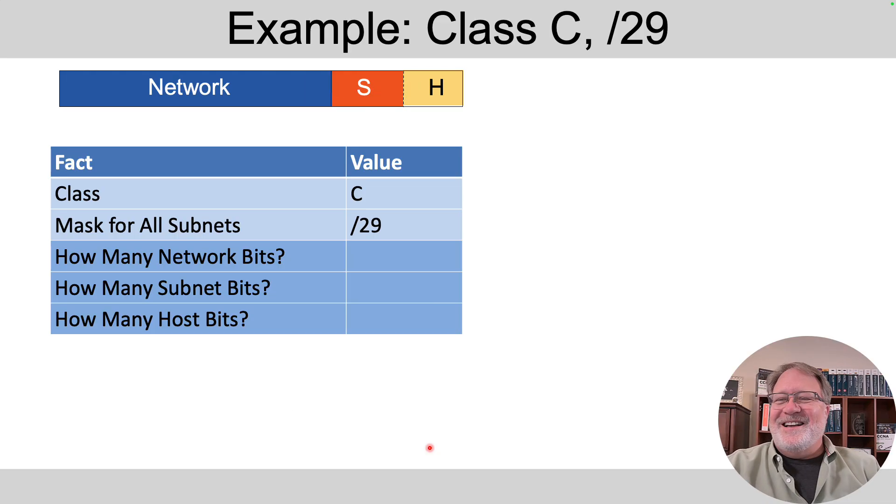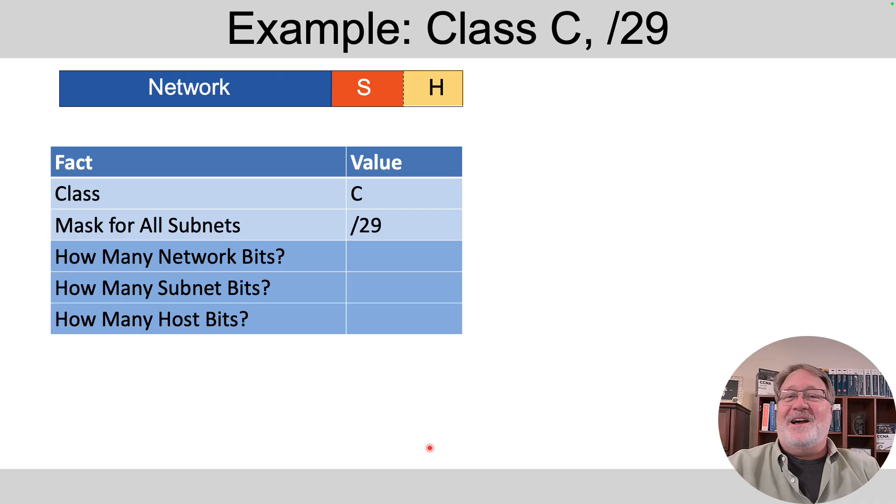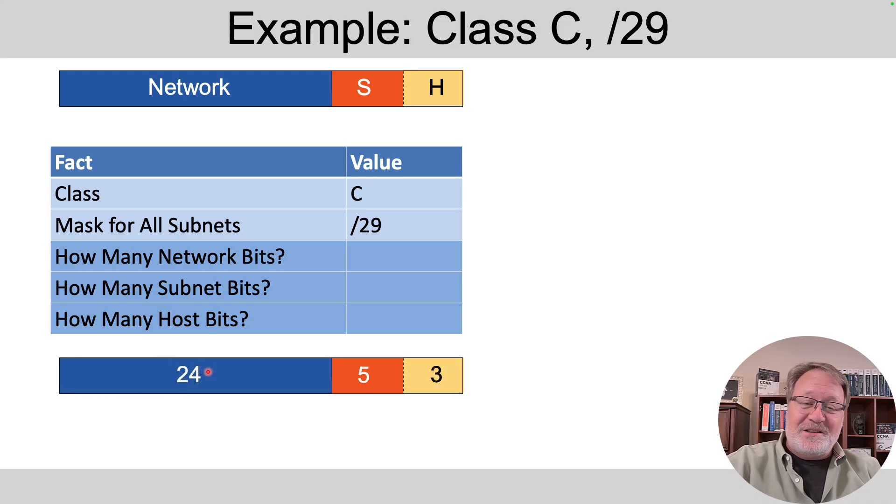One more example. How about a class C example with a slash 29 mask? Because it's class C, our network part is going to be 24 bits long. So we're subnetting some class C network. With this particular mask of slash 29, the network plus subnet part has got to add up to 29, making the subnet part 5 bits wide, leaving 3 bits for the host bits over here.